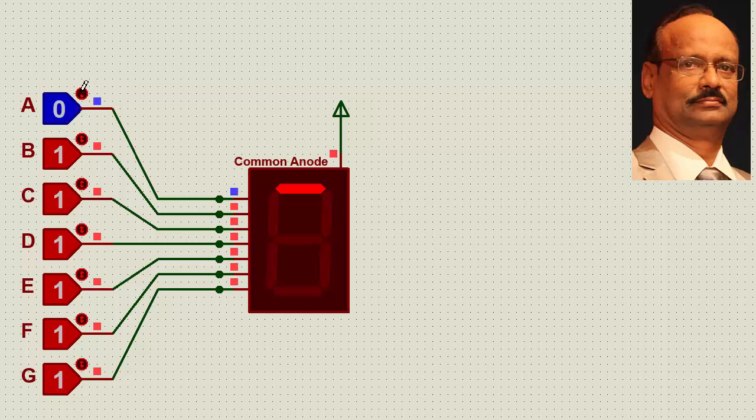Supposing I make this limb 0, you find this particular is glowing. Now if I make this limb, you see this one is glowing. If I make this limb, then this one is glowing. And so on. This one. And finally, this one.